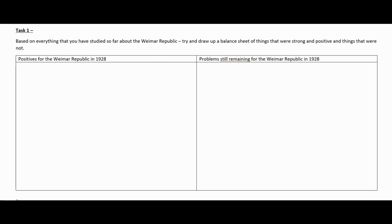What problems remained for the Weimar Republic in 1928? What potential difficulties could it face in the future based on some of the weaknesses that existed? I want you to try and do this from memory first of all, and then we'll come back and see what you came up with.